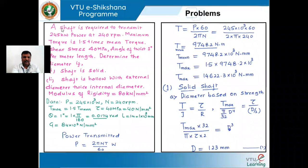Let us take this first problem. A shaft is required to transmit 245 kilowatts of power running at a speed of 240 rpm. The maximum torque is 1.5 times the mean torque. The shear stress for the material of the shaft is 40 MPa. The angle of twist is restricted to one degree in a length of one meter. Determine the shaft diameter for a solid shaft and for a hollow shaft with external diameter twice the internal diameter. We have four cases total: two for solid and two for hollow.